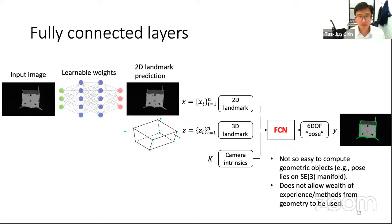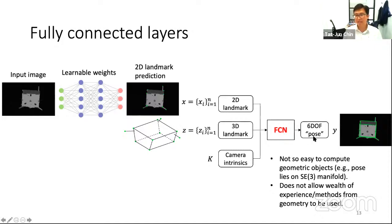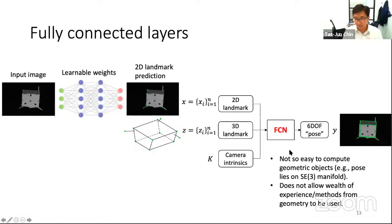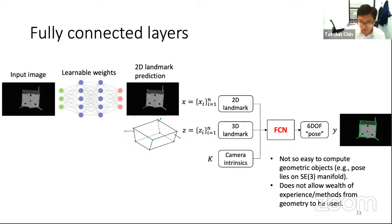One approach is to use fully connected layers (FCN) instead of defining explicit optimization layers — getting the FCN to output a 6-DoF pose directly. The issue with this is that it's not easy to output geometric objects constrained to a manifold. More importantly, it does not allow the wealth of experience and methods from geometry to be used. For example, we know PnP, we know how to solve it and characterize its solution — but if we replace the PnP solver with an FCN, we throw away all that known information.